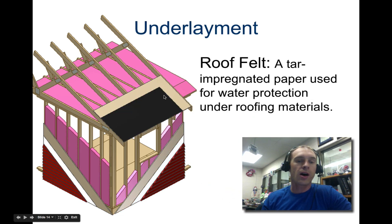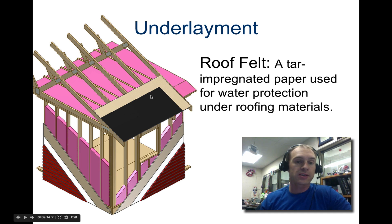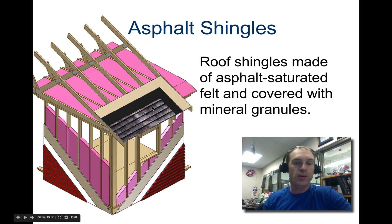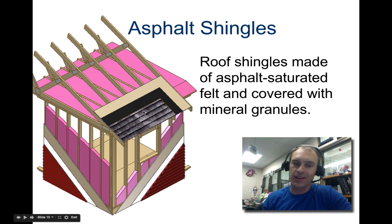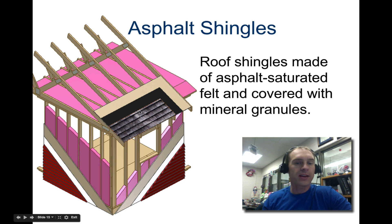On the roof you have underlayment, often called roof felt or tar paper, and it protects the roof sheathing because water can't get through it. Above that you put shingles, which are overlapped so that as water runs downhill it doesn't seep underneath. If anything does get under the shingles, the tar paper protects it and the water hopefully travels all the way down to the roof edge.